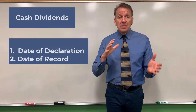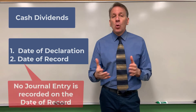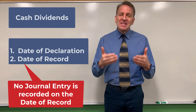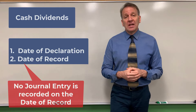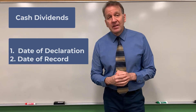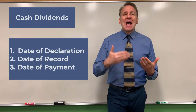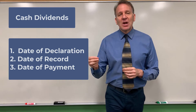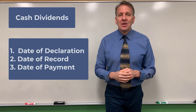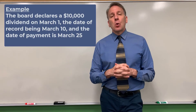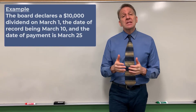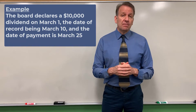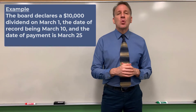Because a lot of these shares are being bought and sold on the stock market, the people that own the shares on the date of record are the ones that will receive the dividend. The third date is the date of payment — when the payment is actually made to those people on the date of record. For example, let's assume the board of directors declares a dividend of $10,000 on March 1st. The date of record is March 10th, and the date of payment is March 25th.